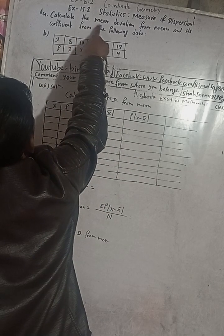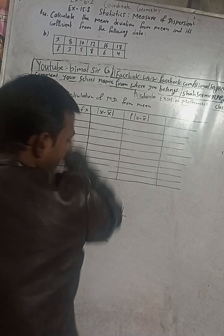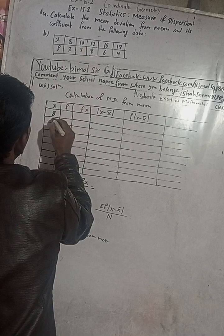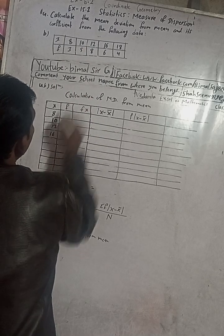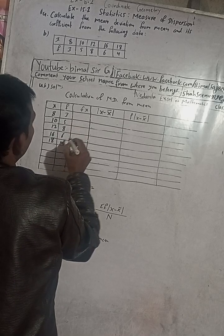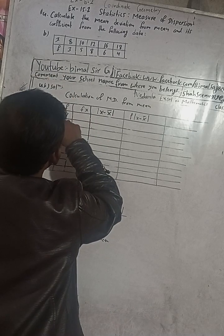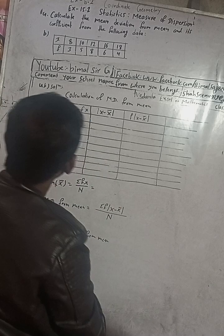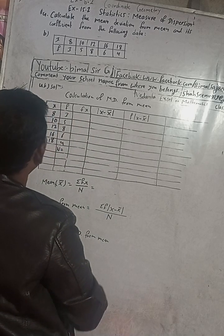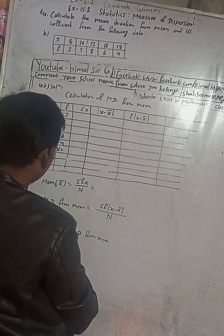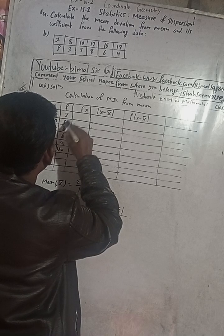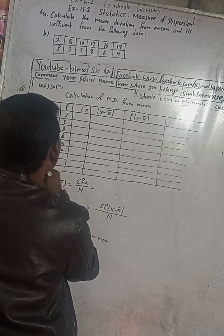For the solution, we are calculating mean deviations from mean. The table has x values: 8, 10, 12, 16, and 18. The corresponding frequencies are 3, 5, 8, 6, and 4. Now after listing x and f, we need to find fx. Adding the frequencies: 3 + 5 + 8 + 6 + 4 gives us N = 26.